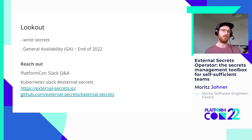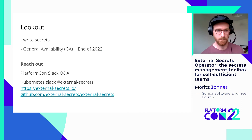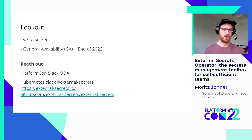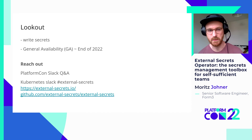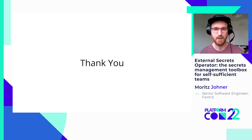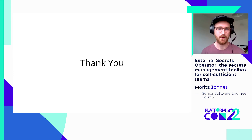Looking to the future, we plan to add the ability to write secrets to the provider — so ESO will be able to push secrets to Azure Key Vault or AWS Secrets Manager. Also, by the end of the year, we want to go to GA. If you have any questions, feel free to reach out in the PlatformCon Slack — I'll be available for a Q&A session. You can also join the External Secrets channel in the Kubernetes Slack. Thank you if you made it this far, and thank you to all contributors to the External Secrets project, and special thanks to Manitech for organizing PlatformCon.